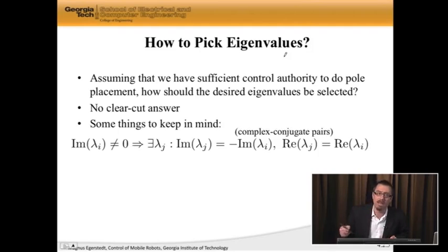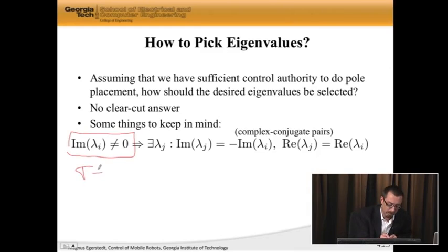If the eigenvalues have a non-zero imaginary part, let's say σ + jω is an eigenvalue, then there has to be another eigenvalue.